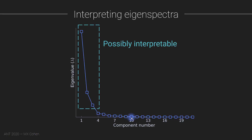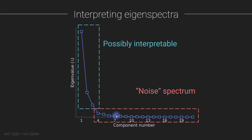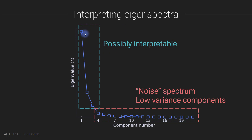The rest of the spectrum is sometimes called the noise spectrum — in quotes, because we don't actually know if the information in those later dimensions is noisy per se; we just know they're low-variance components. They could contain important information. In fact, if you perform PCA on data containing a lot of noise or artifacts, probably the artifacts will explain most of the variance and the signal features might be in the lower components. But overall, these are components that explain relatively little variance in the total multivariate dataset.